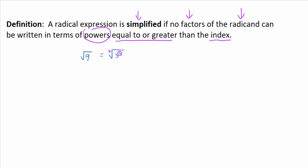What about the cubed root of 8? That's not simplified because the cubed root of 8 is 2. We can write it as the cubed root of 2 cubed — the power equals the index, so it's not simplified. Similarly, the cubed root of 2 to the 4th, which is the cubed root of 16, is not simplified because the power 4 is greater than the index 3.